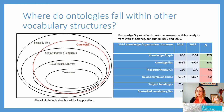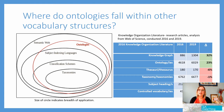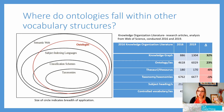Research on thesauri and taxonomies is down in the last four to five years — not because they're going away or less important, but because they are more stable. A lot of people have accepted them and there are a lot of standards around them. But when you get into things like ontologies and knowledge graphs, those are more cutting edge. People are still figuring them out; there's not a ton of standards, but they are very useful, especially for machine learning.